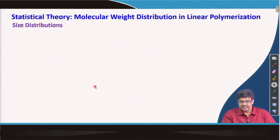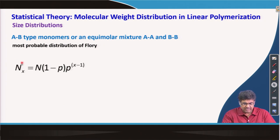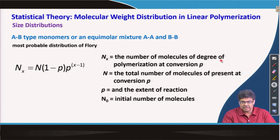Next, we move to the statistical theory of molecular weight distribution in linear polymerization. We will talk about size distribution, again considering the simplest situation of AB type monomer or an equal ratio of AA and BB. This distribution — the most probable distribution — was provided by P. J. Flory. The final expression gives N_x, the number of molecules with degree of polymerization x, while N is the total number of molecules present at conversion p.